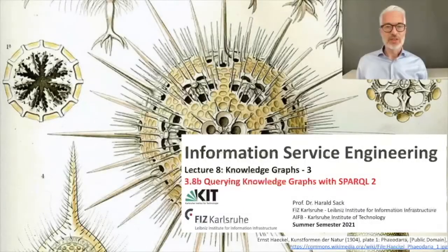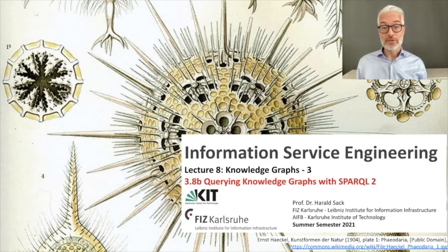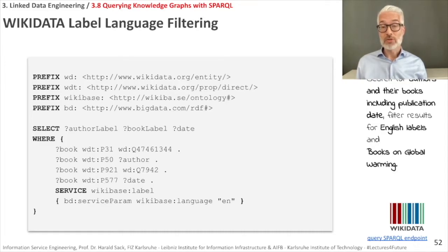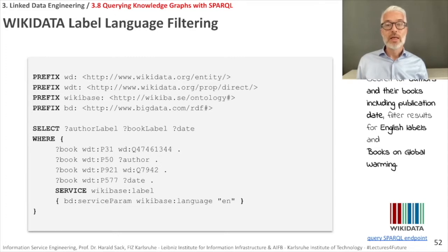This is Information Service Engineering lecture number eight, Knowledge Graphs Part Three, the second part of SPARQL query language and querying knowledge graphs with SPARQL. We now have more complex queries to look at and we are switching from DBpedia to Wikidata. We want to search for authors, their books including publication date, filter results for English labels only, and filter for books on global warming.